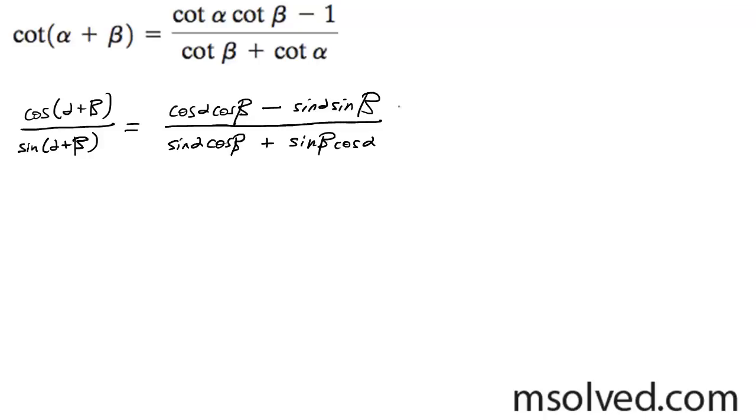And to make this work out like we have in the top there, because that is the true formula for the addition of two cotangent angles, what I'm going to do here is I'm going to divide everything through the numerator and denominator by one over sine alpha, sine beta.